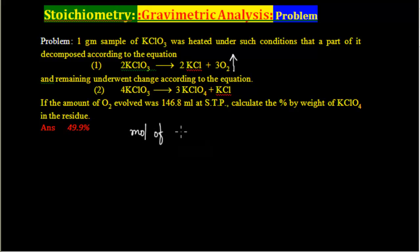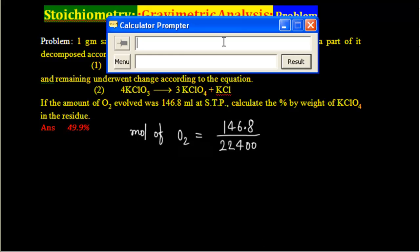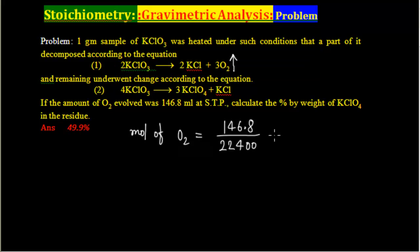The volume of O₂ is given as 146.8 mL, so moles of O₂ = 146.8 divided by 22400. Using a calculator: 146.8 ÷ 22400 = 6.55 × 10⁻³ mol.